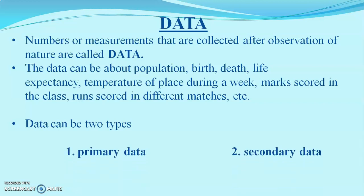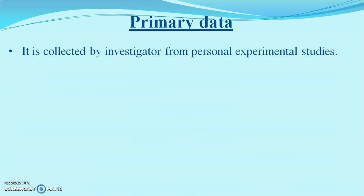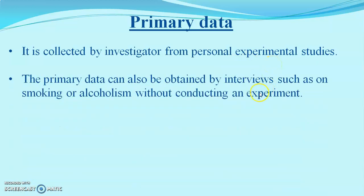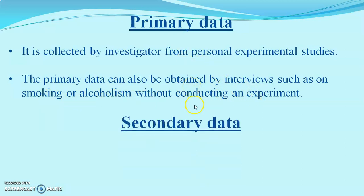Data can be of two types: primary data and secondary data. If the observer directly collects the data from the original source by an experiment or by personal effort, it is called primary data. It is collected by the investigator through personal experimental studies from the original source. Primary data can also be obtained through interviews, surveys, or any aspect such as smoking or alcoholism.